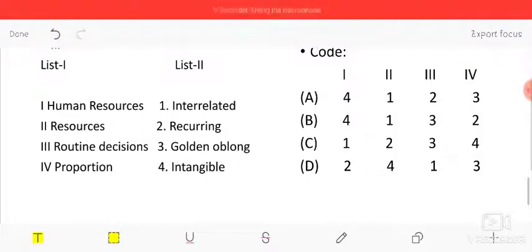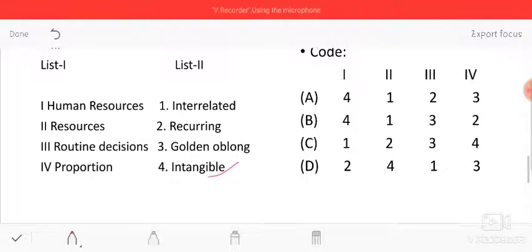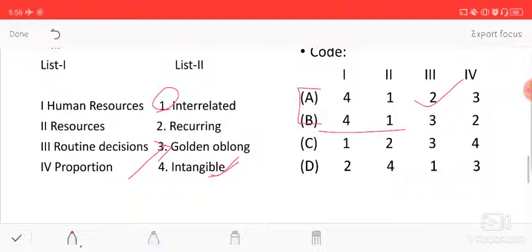Matching human resources, resources, routine decision, and proportion. Human resources are intangible - internal capabilities, skills, and knowledge that you can't touch. Resources have characteristics like being limited and interrelated. Routine decisions are daily decisions that don't need planning and plotting. Proportion is golden oblong, a Greek word used for proportion. Option A is the correct answer.